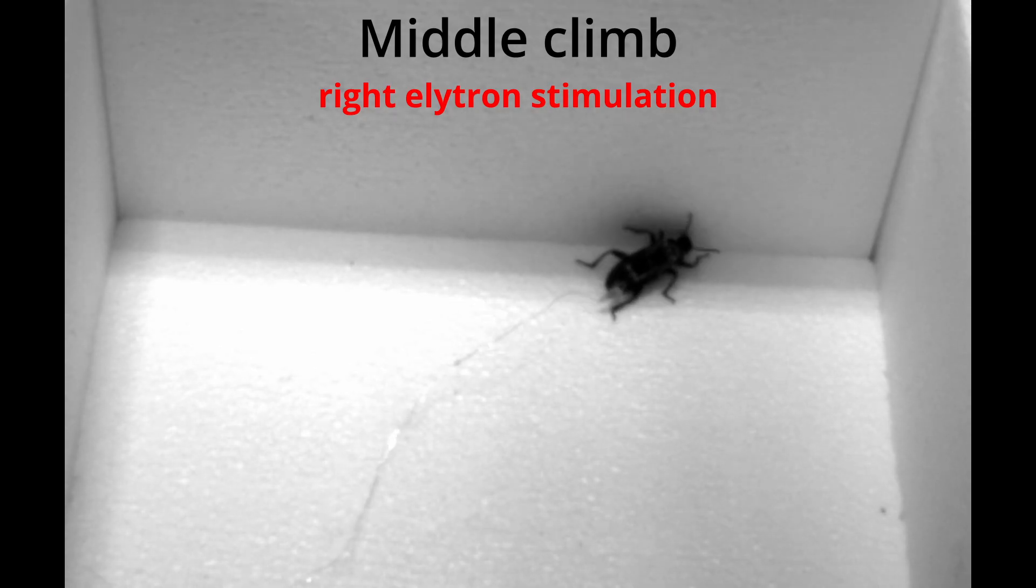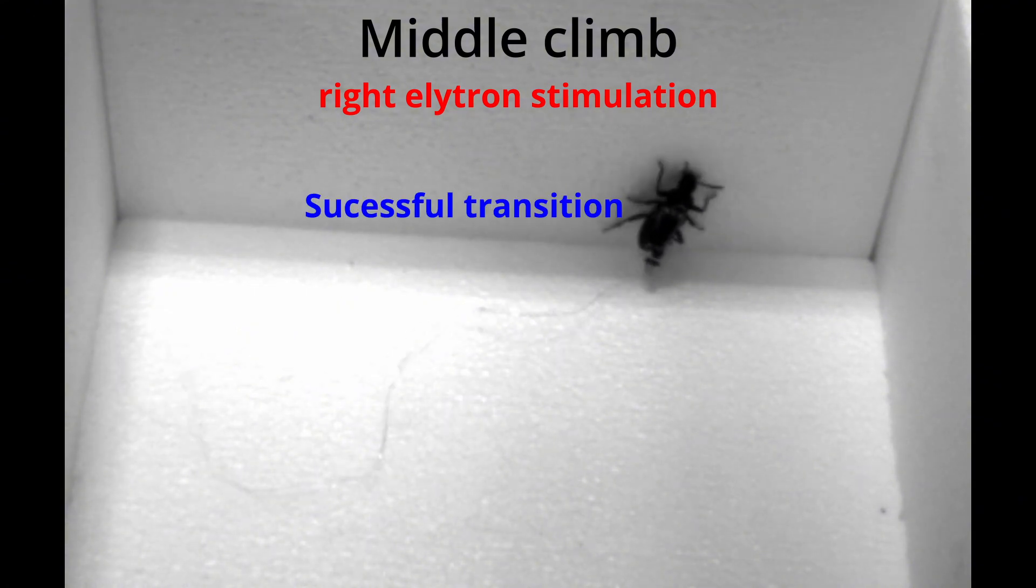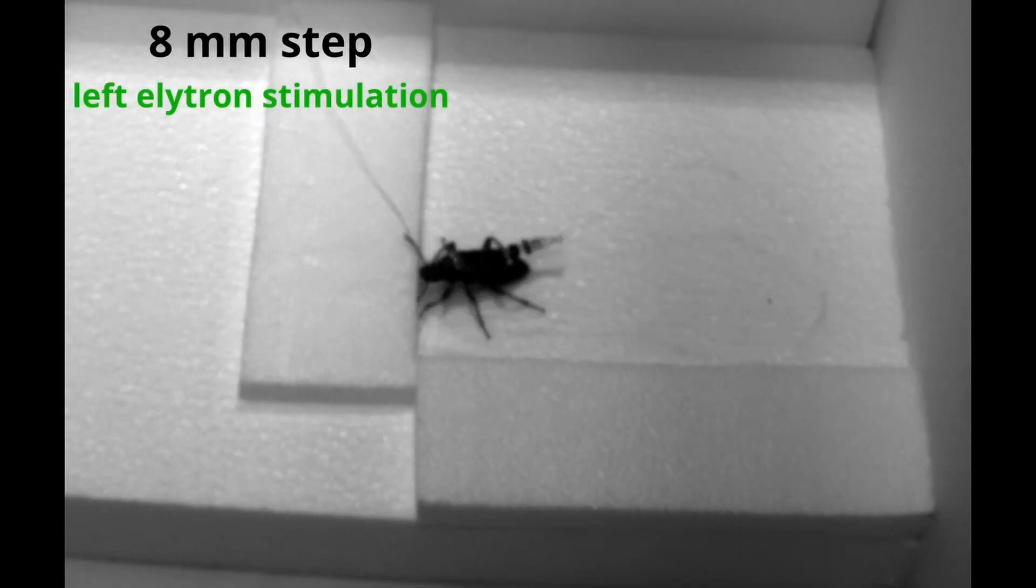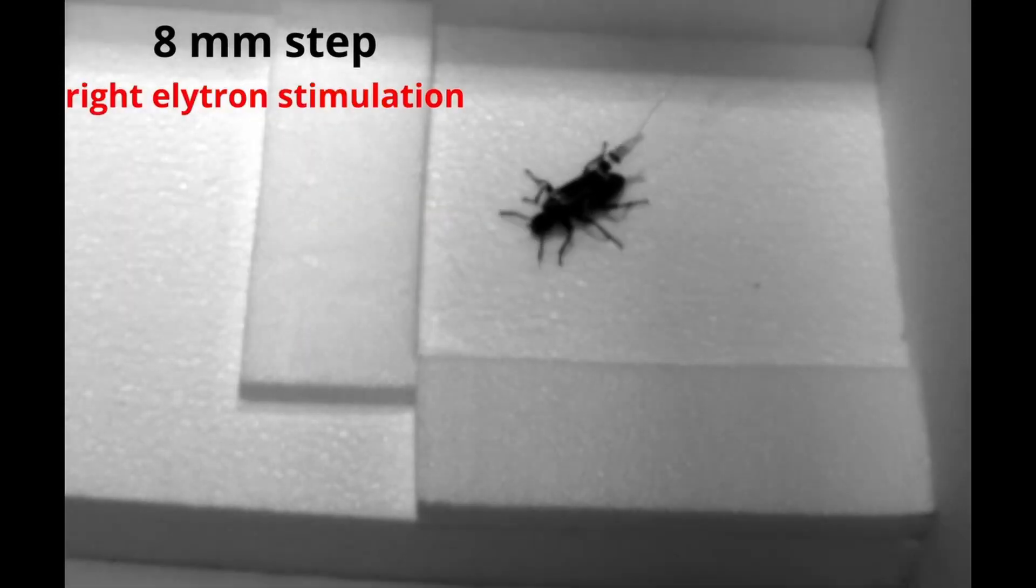The technological challenge was not in mobility, but in control, and this research proves that hurdle can now be overcome. Currently, the team is working on refining the technology even further. They're developing lighter, more efficient batteries and working to integrate tiny cameras into the backpacks, which would allow rescuers to see what the beetles see in real time.